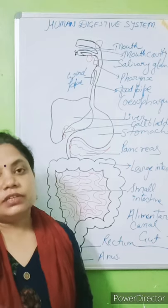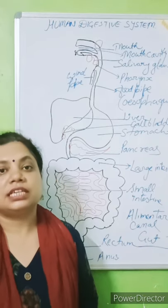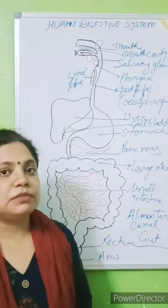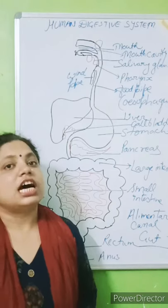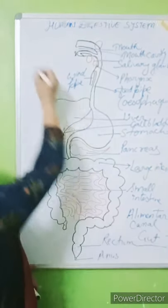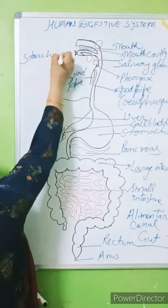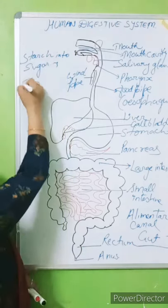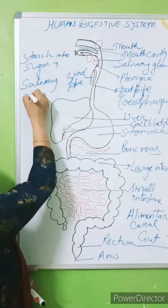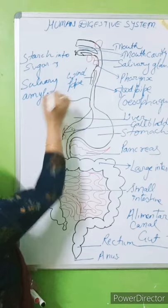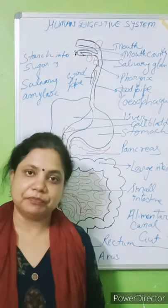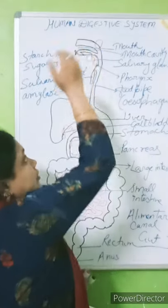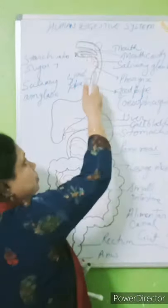Saliva contains salivary amylase, which is an enzyme present in the salivary glands. Salivary amylase breaks starch into sugar. After that, the partially digested food enters through the pharynx into the esophagus.